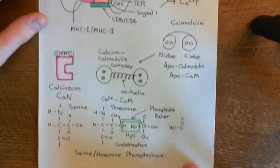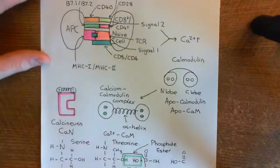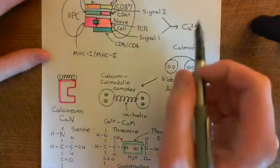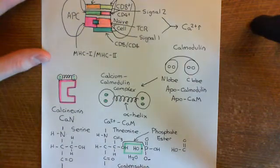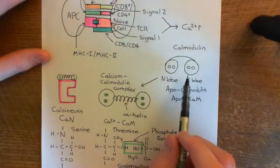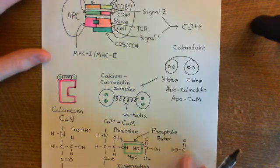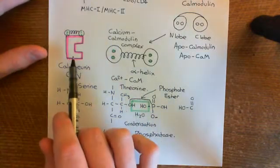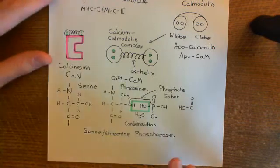We've seen that signal 1 and signal 2 being delivered to a naive T-cell, whether it be a CD8 positive or CD4 positive naive T-cell, is going to cause calcium to go up within the cytoplasm. The calcium will then bind to apocalmodulin proteins within the cytoplasm, transforming them into calcium-calmodulin complexes, which then bind to the enzyme calcineurin in the cytoplasm and activate it.